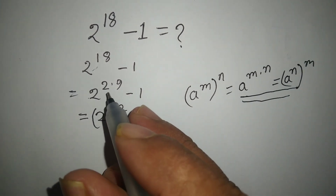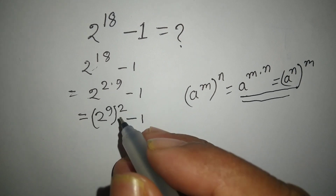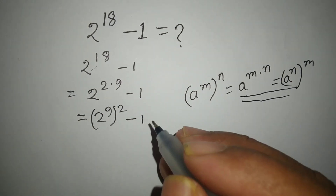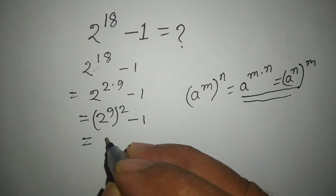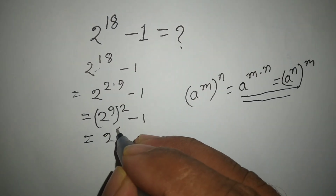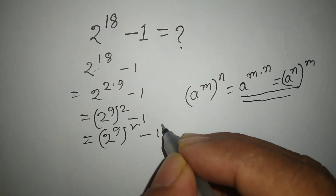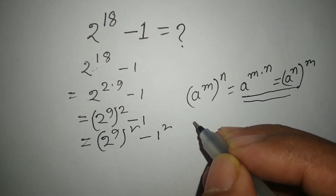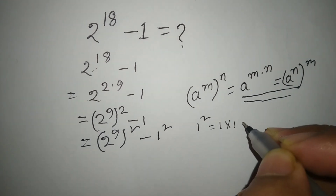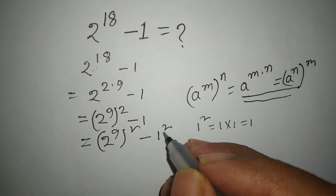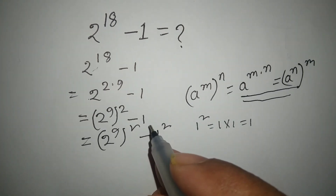We can write 2 to the power 2 into 9 equal 2 to the power 9 whole square, minus 1. This becomes 2 to the power 9 whole square minus 1 square, because 1 square equals 1, so we can write 1 equal 1 square.